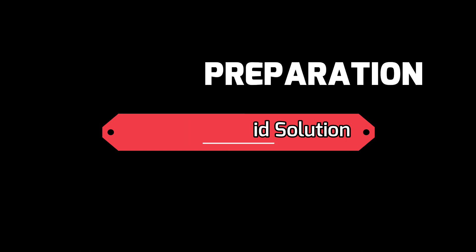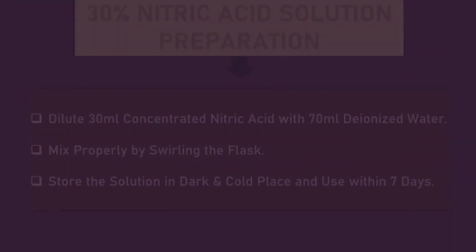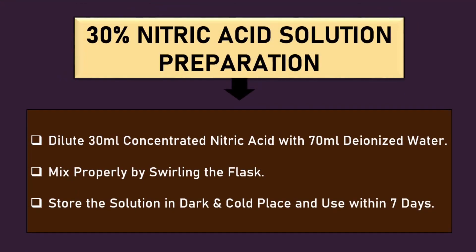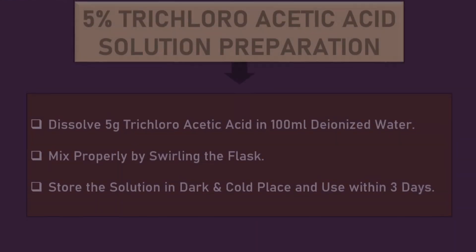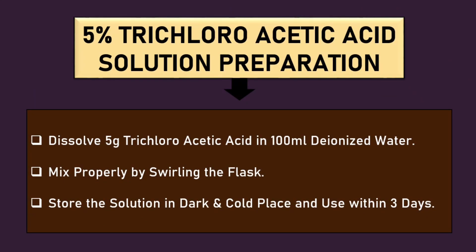We can prepare 30% nitric acid by diluting 30 ml concentrated nitric acid with 70 ml deionized water. 5% trichloroacetic acid can be prepared by dissolving 5 grams trichloroacetic acid crystals into 100 ml deionized water.